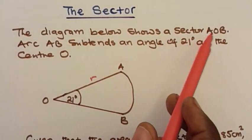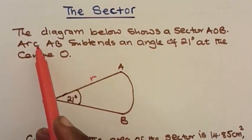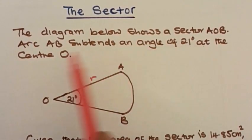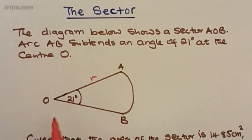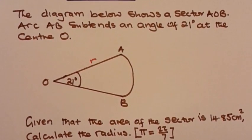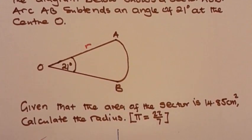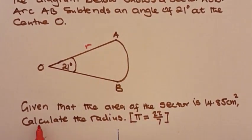Here is the question. The diagram below shows a sector AOB. Arc AB subtends an angle of 21 degrees at the center O. Given that the area of the sector is 14.85 square centimeters, calculate the radius.